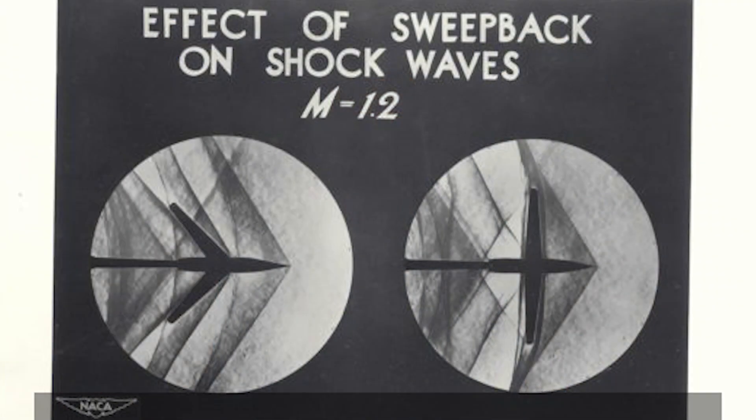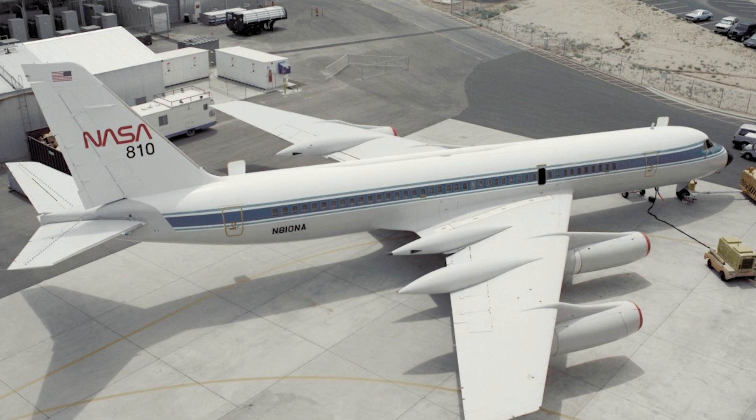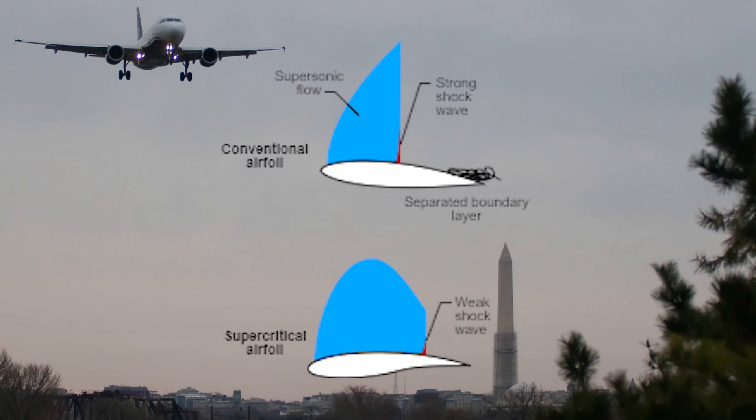Wave drag is a disadvantageous phenomenon because it is basically a drag, so let us discuss some ways to reduce it. First, the use of swept wings — major commercial and military aircraft use swept wings, and flow analysis shows that swept wings produce wave drag of lower intensity than straight wings. Second, anti-shock bodies: these pod-like structures are placed on the leading or trailing edge of an aircraft's aerodynamic surface to reduce the shock. Third, supercritical airfoils: these airfoils are specially developed to delay the formation of shock waves by virtue of their shape.